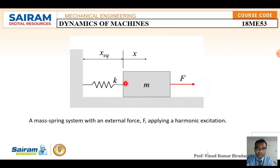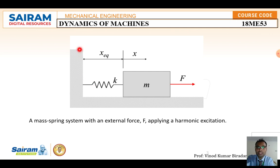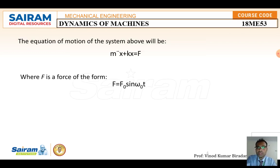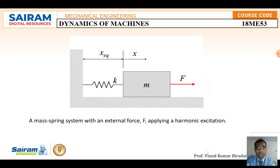This is a spring-mass system. Here we are going to apply some external force F₀. It will displace to some position X — that is the displacement. The spring is denoted by K and this is a fixed position. Here we are going to apply some excitation harmonic force, and we need to study how the amplitude changes in this section. The equation of motion of the forced vibration is: mẍ + Kx = F, where F is the external harmonic force.